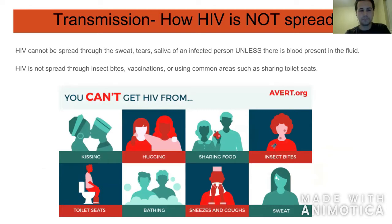HIV is not spread in some ways that people may be concerned about. It's important to know that HIV is not spread through tears, saliva, or sweat — unless there is blood present in one of those fluids. For example, if an HIV positive mother chewed up food for her baby but had mouth sores, the baby could become infected because there was blood in the saliva. HIV is also not spread through insect bites, vaccinations, or using common areas such as sharing toilet seats.